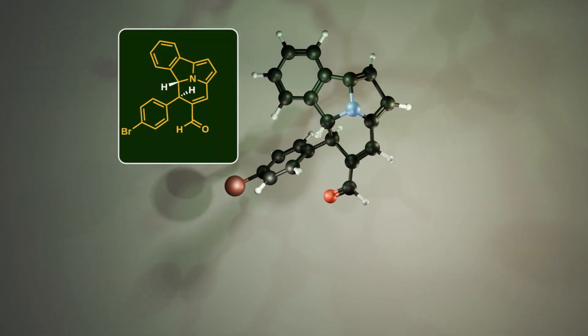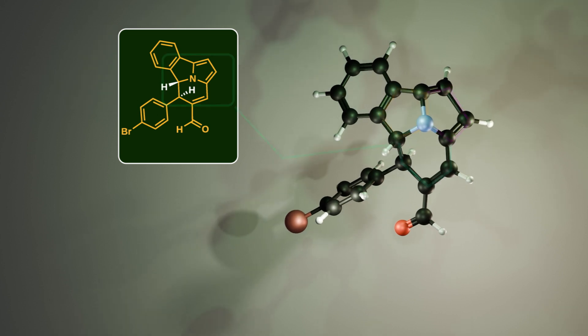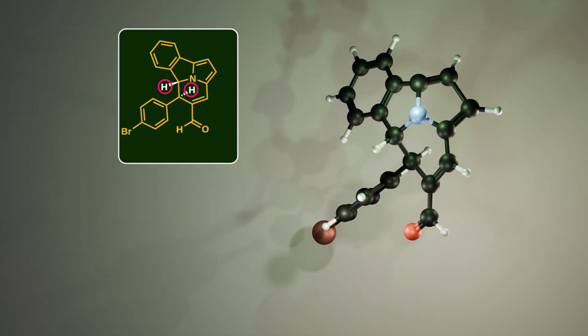Let's take a look at the 3D model of the final product. In this complex architecture, three cyclic rings are joined together by a nitrogen atom. As you can see, these two hydrogen atoms are in a trans configuration. The role of the organocatalyst is to ensure their trans stereoselectivity.